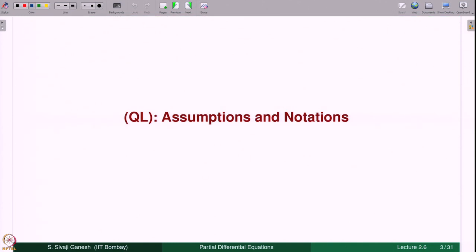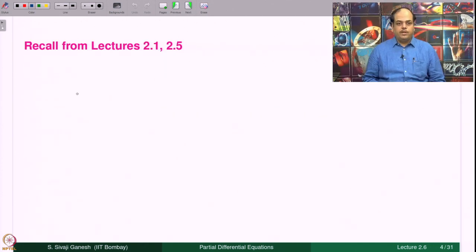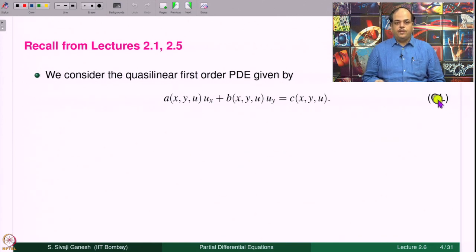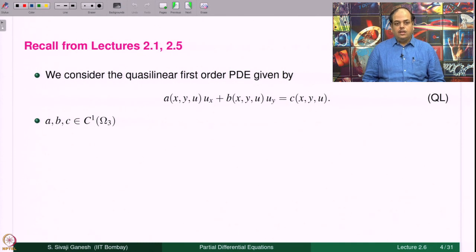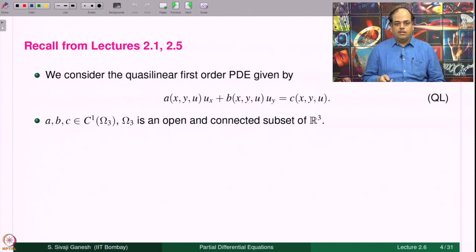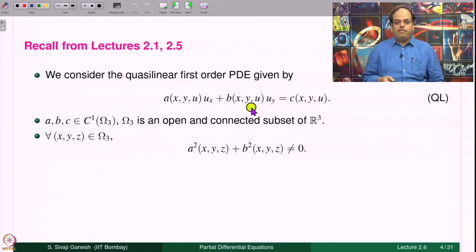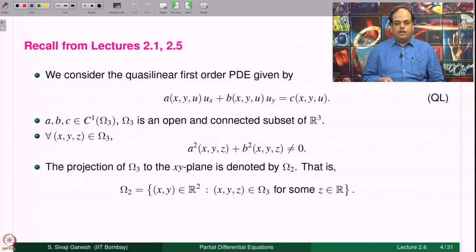Assumptions and notations used in the context of quasilinear equations — recall from lectures 2.1 and 2.5. A quasilinear equation, denoted QL, is: A(x,y,u)u_x + B(x,y,u)u_y = C(x,y,u), where A, B, C are assumed to be C¹ functions defined on omega_3, an open connected subset of R³. We require that A and B do not vanish simultaneously at any point in omega_3. The projection of omega_3 to the xy-plane is denoted omega_2.